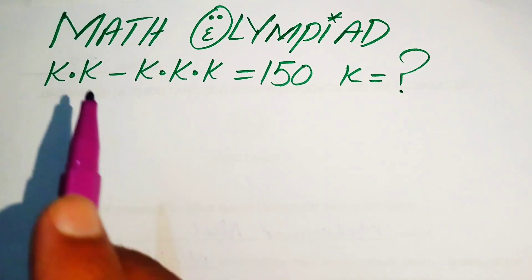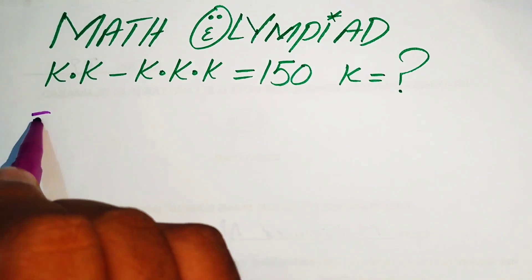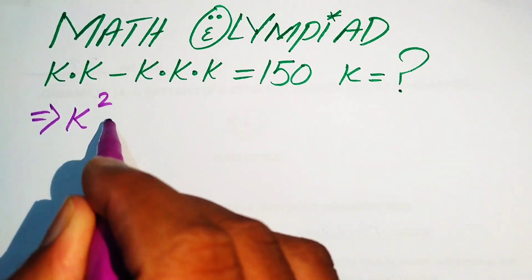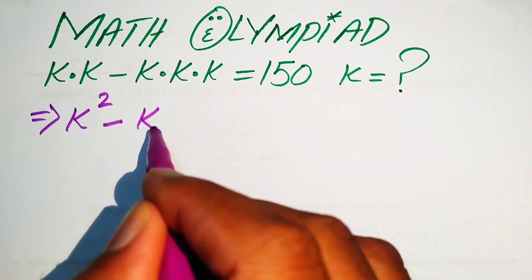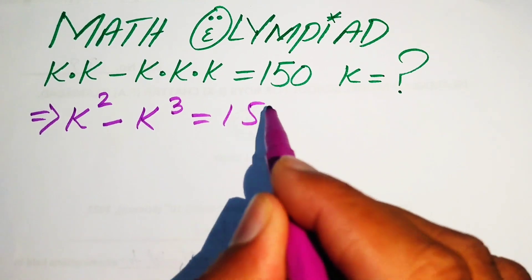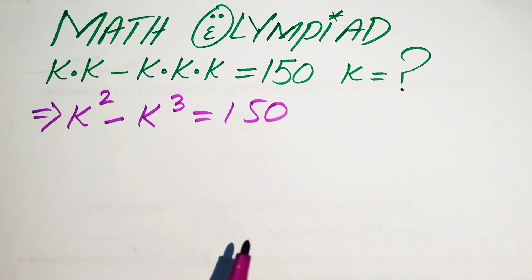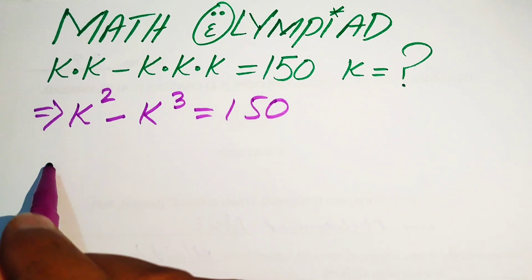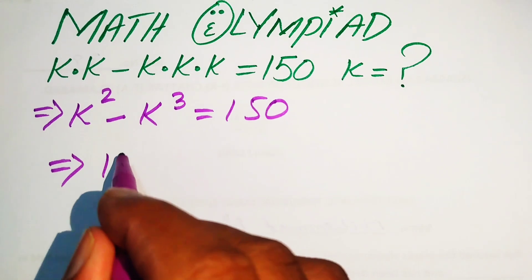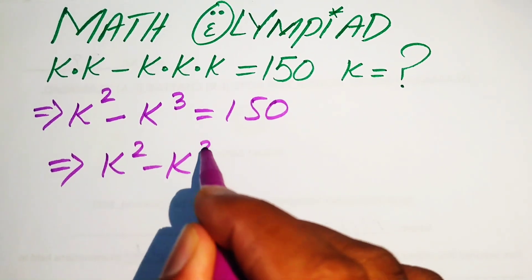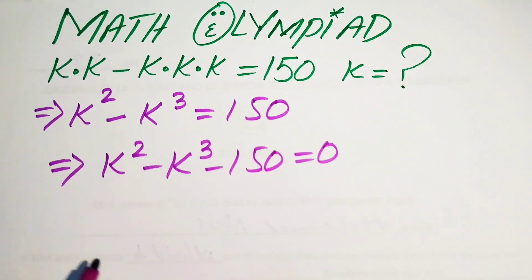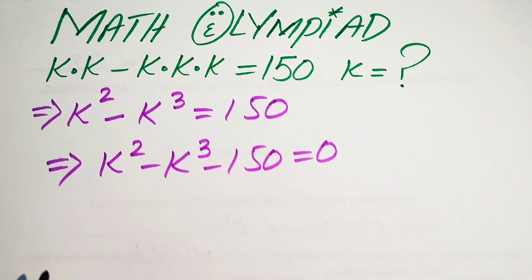In the first term, k is multiplied 2 times, so we write it as k squared. Here k is multiplied 3 times, so we write it as k cubed. This whole equation equals 150. In the next step, we rearrange the terms, moving 150 to the left-hand side: k squared minus k cubed minus 150 equals 0.